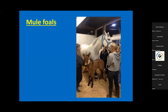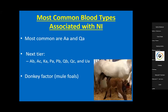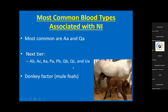Again, mule foals are particularly high risk because their blood is so antigenic and so foreign to the mare. The most common blood types associated with NI are aa and qa, along with several other possibilities. Many different types can cause NI if the mare doesn't have them. And of course donkey factor - the protein on donkey red blood cells that mule foals inherit - makes mule foals really high risk.